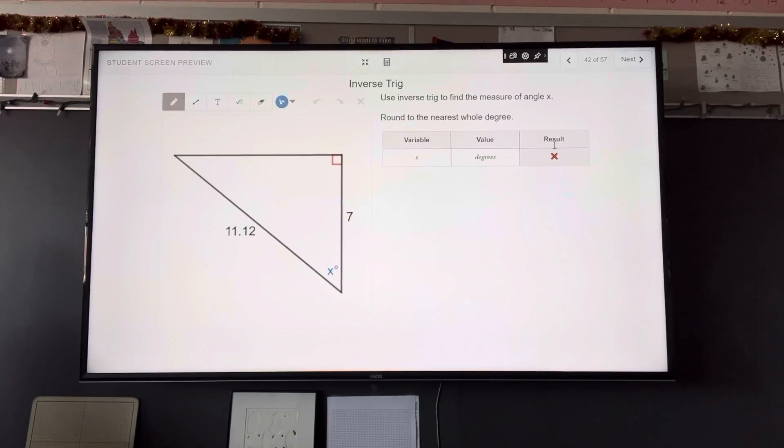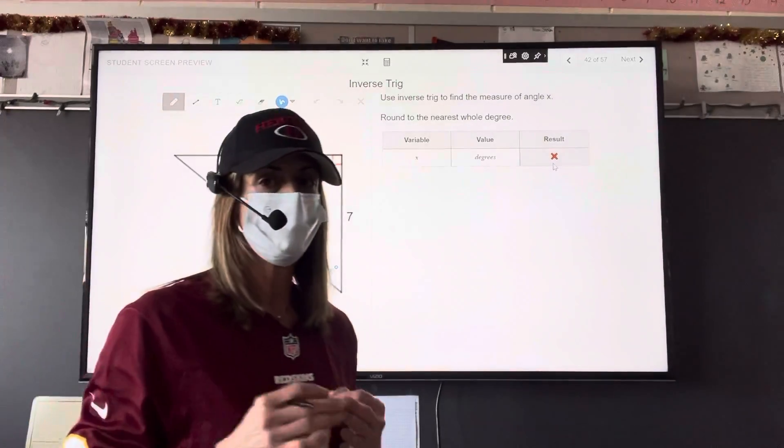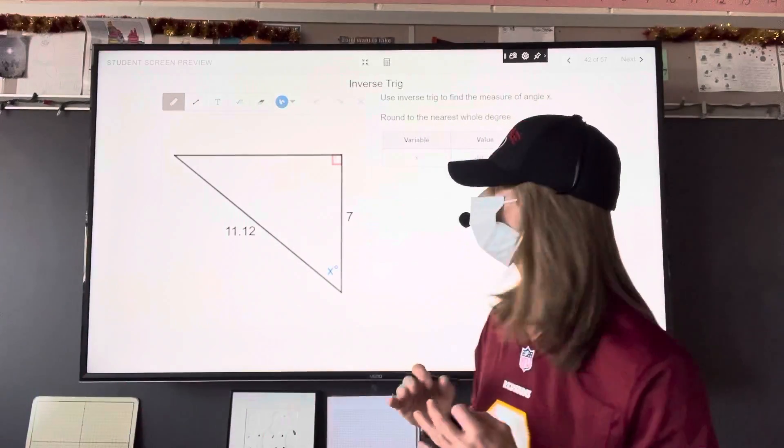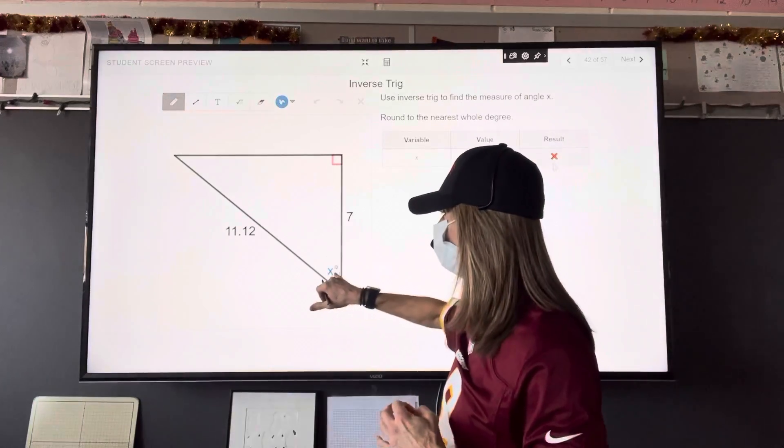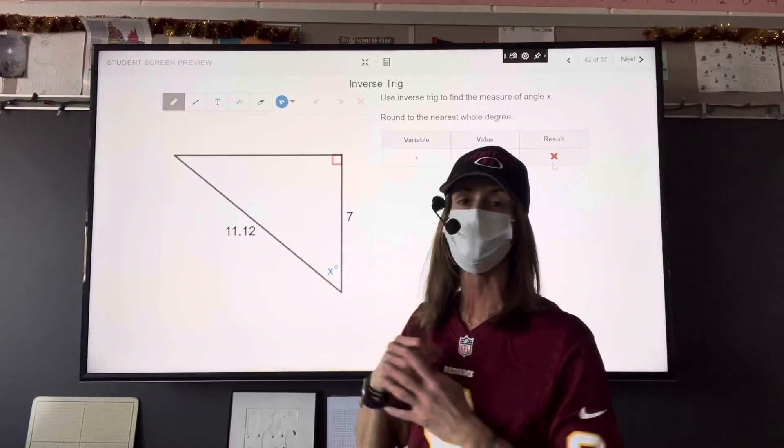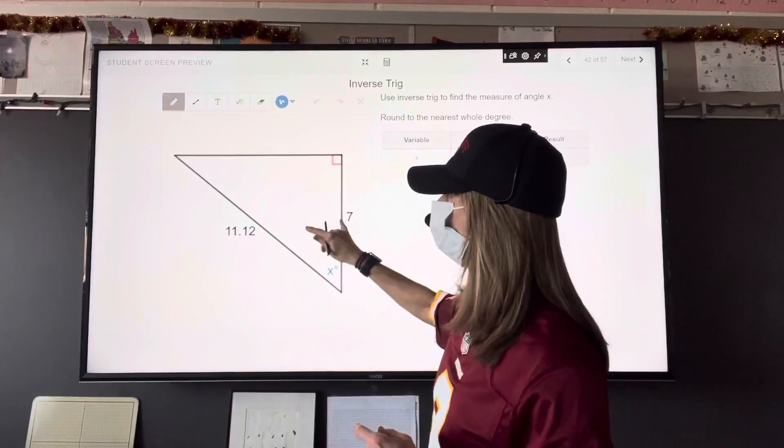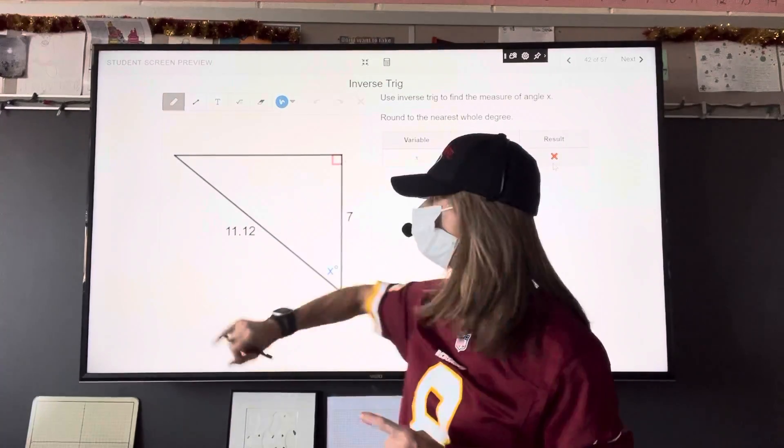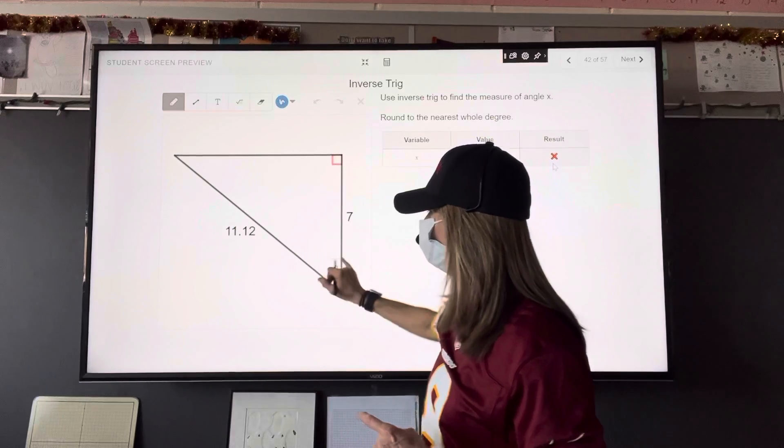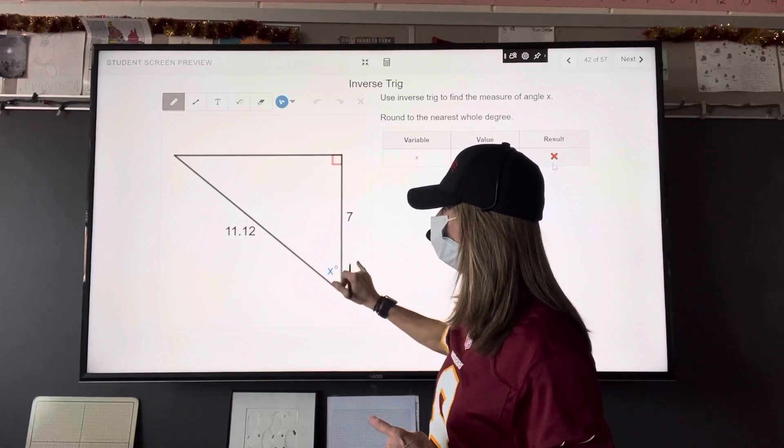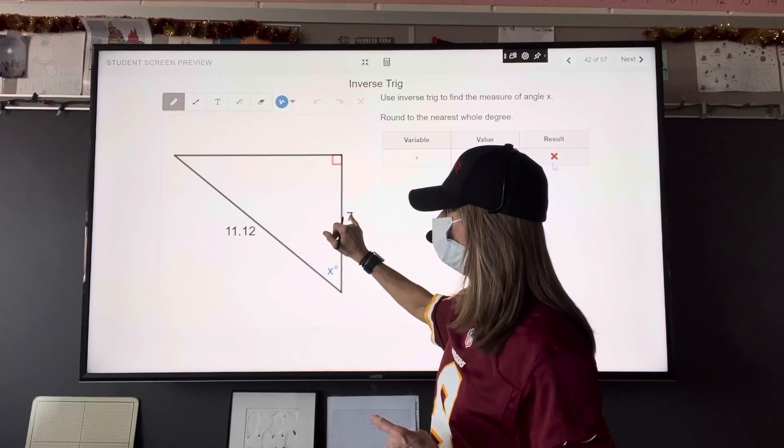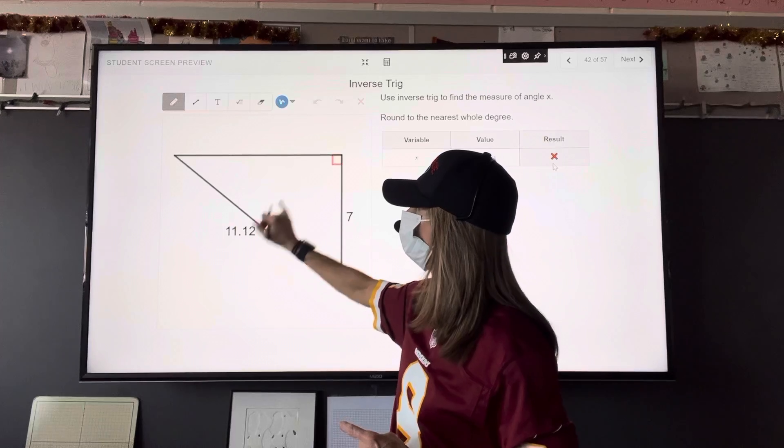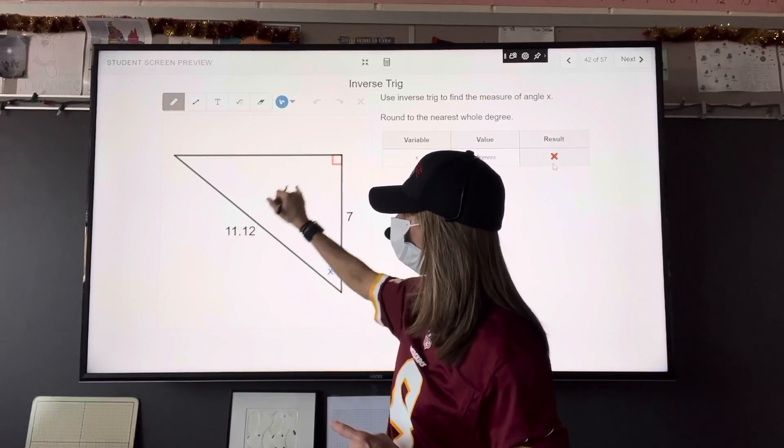All right, we're going to do one more type of problem, and that's an inverse trig problem. So we're going to move to slide number 42. We can immediately tell this is an inverse trig problem because we are trying to find our unknown is the measure of an angle. So we're given two sides. We're not asked for the third side because that'd be Pythagorean theorem. We're asked to find the measure of this angle. So referencing this angle, this 7 is adjacent, and this 11.12 is the hypotenuse because it's across from the right angle.